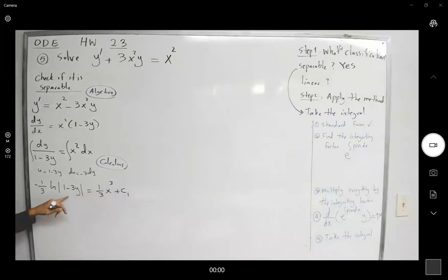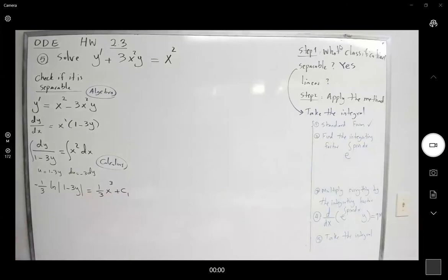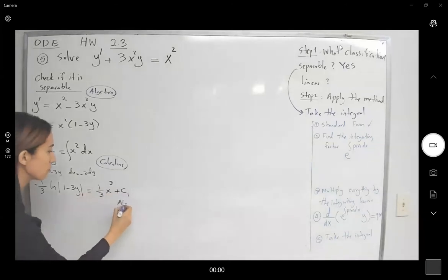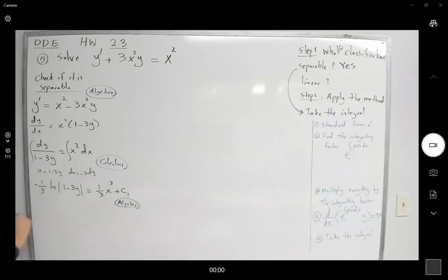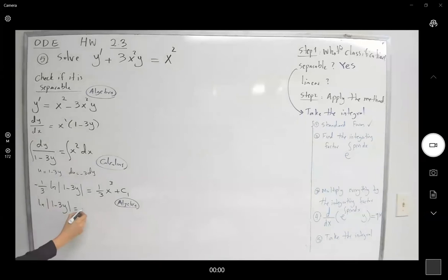Our goal is to isolate y on one side. We're going to multiply everything by negative 3. Going back and forth between calculus and algebra helps us eventually isolate y, or if we can't, leave it in implicit form. Multiplying by negative 3, we get ln of the absolute value of 1 minus 3y equals negative x cubed minus c₁.